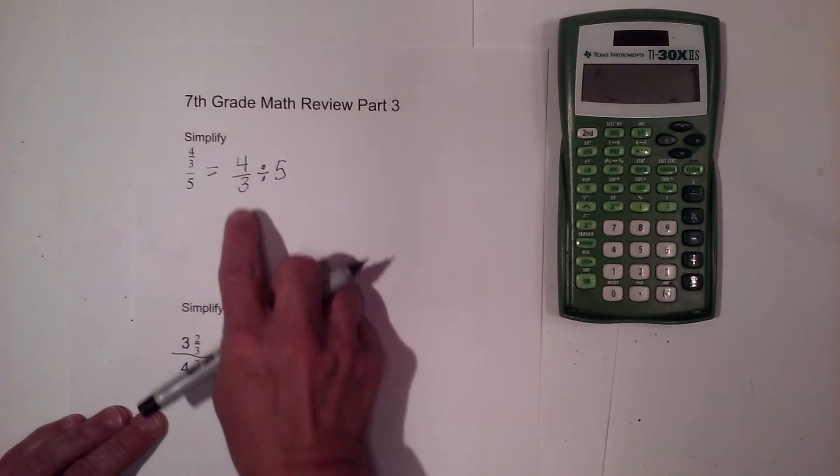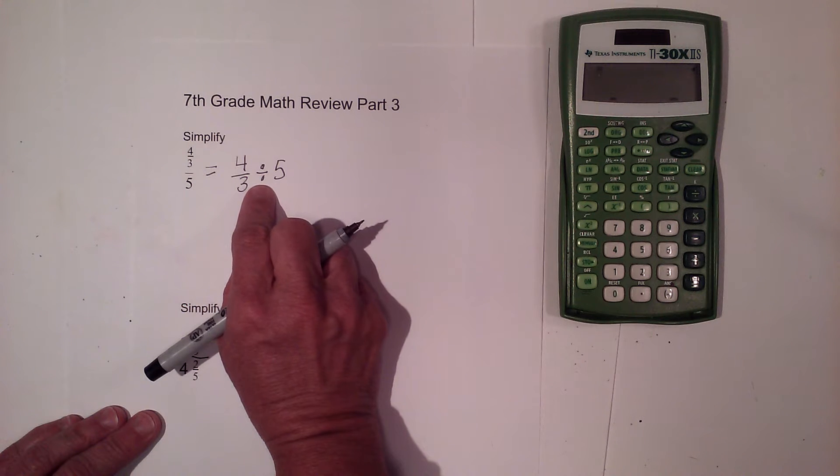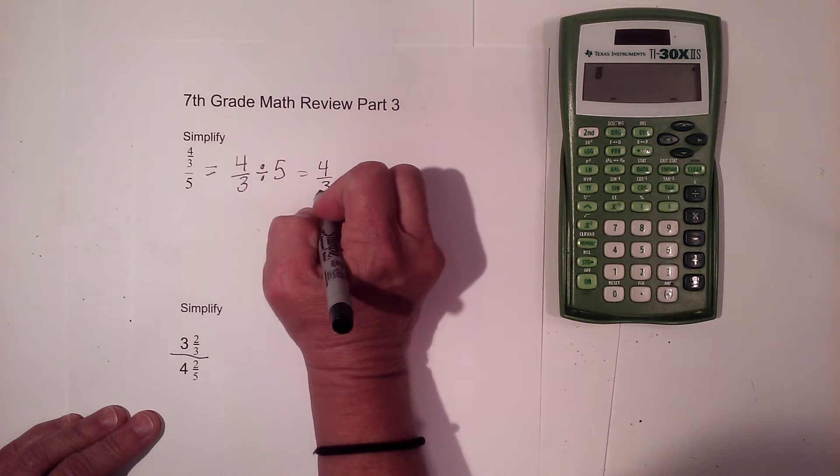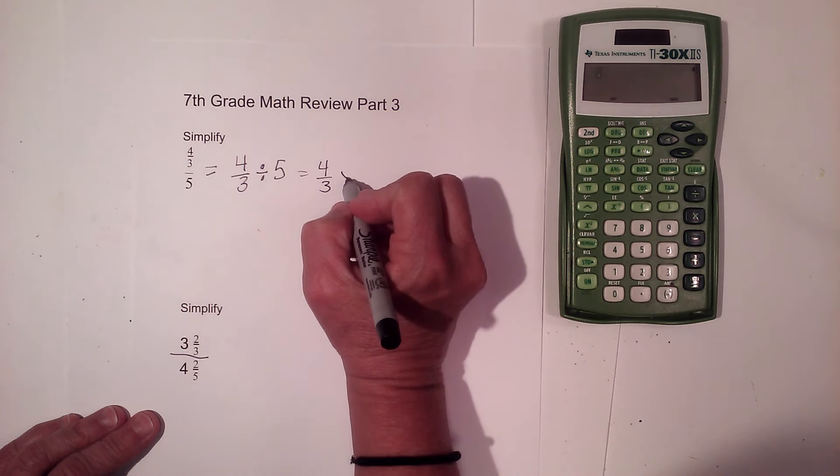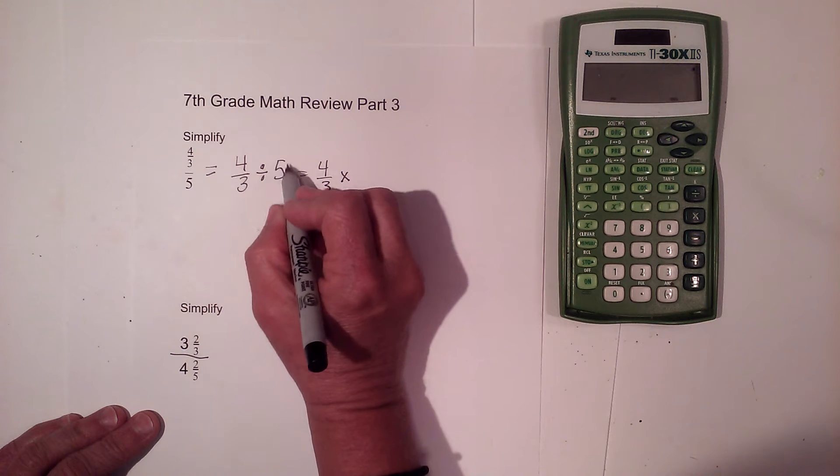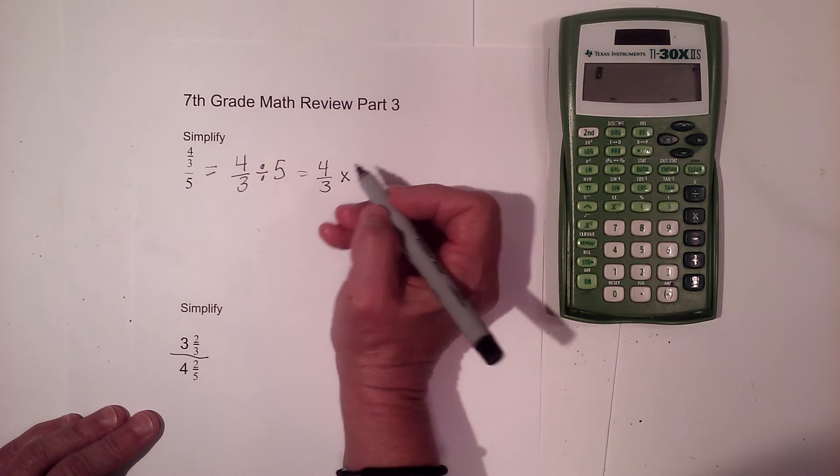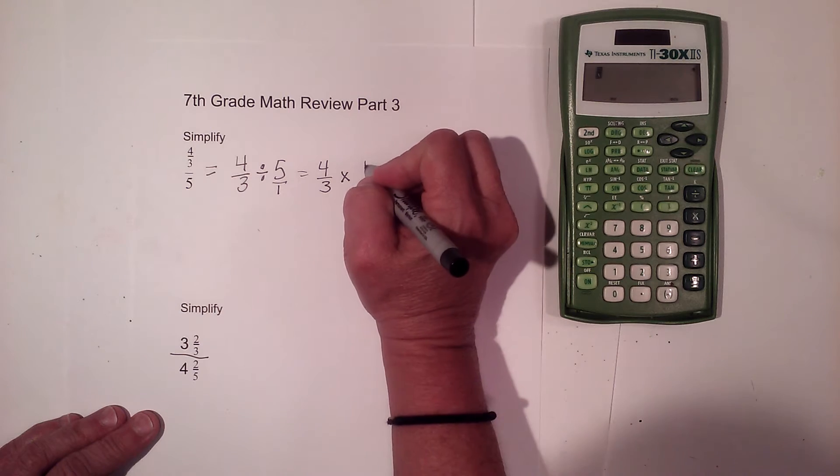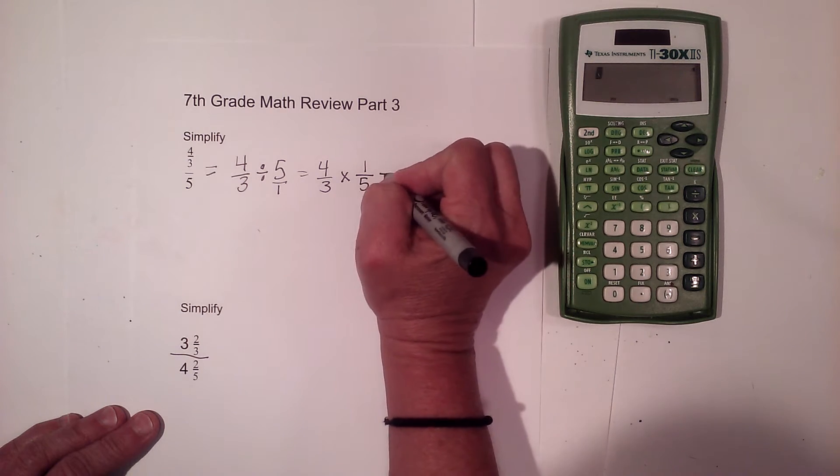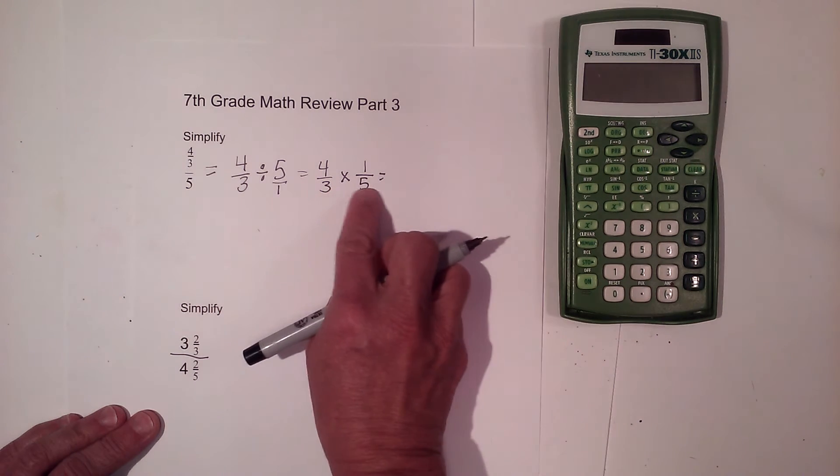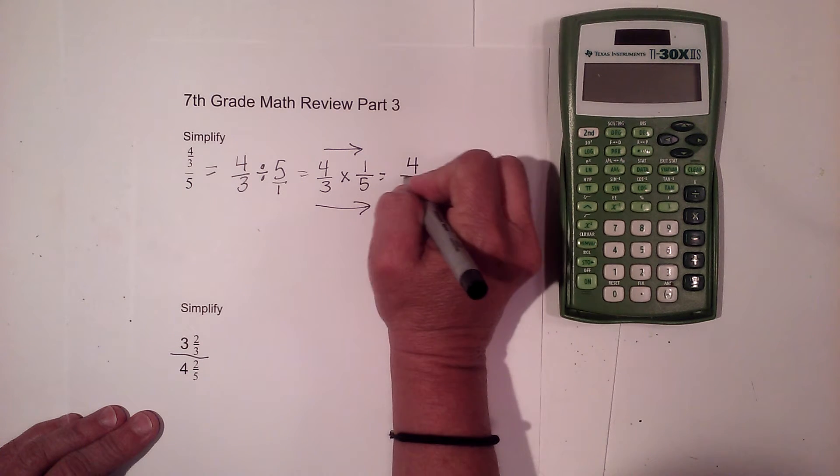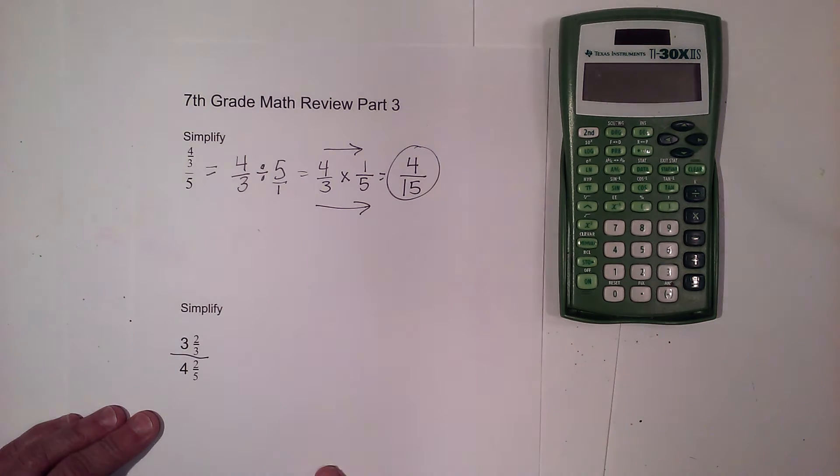Now when I have division involving fractions, I can use the keep change flip method. So I'm going to take 4 thirds, I'm going to keep it, I'm going to change my division to multiplication, and I'm going to flip, which means reciprocal. I'm going to take the reciprocal of 5. Well 5 is 5 over 1, so that's going to be 1 fifth. Now once you keep change flip, we can now just multiply straight across, and we get 4 over 15.